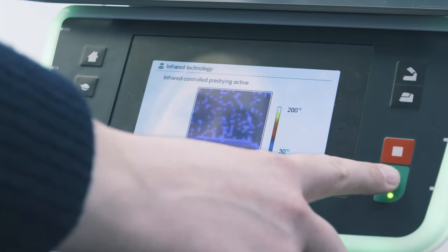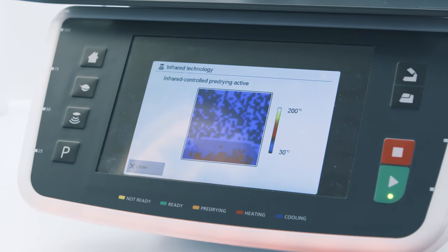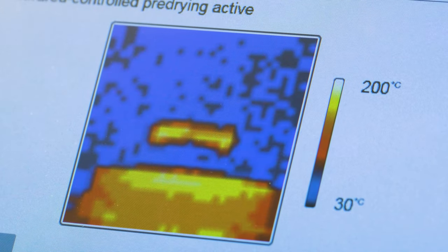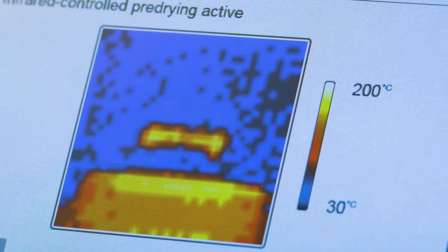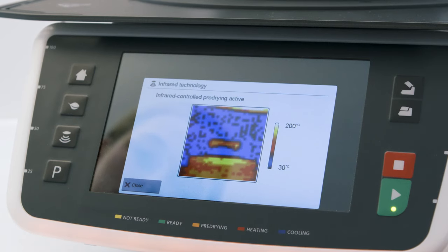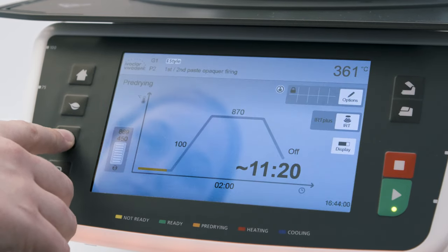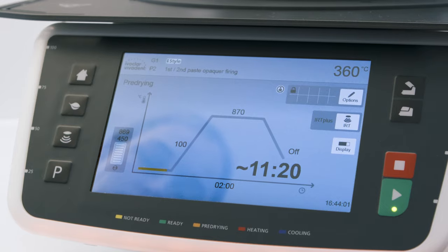With the infrared technology active, the software transmits an image of the object in the firing chamber to the display during the drying and closing process. The IRT key enables you to switch between the thermographic image and the firing curve display.